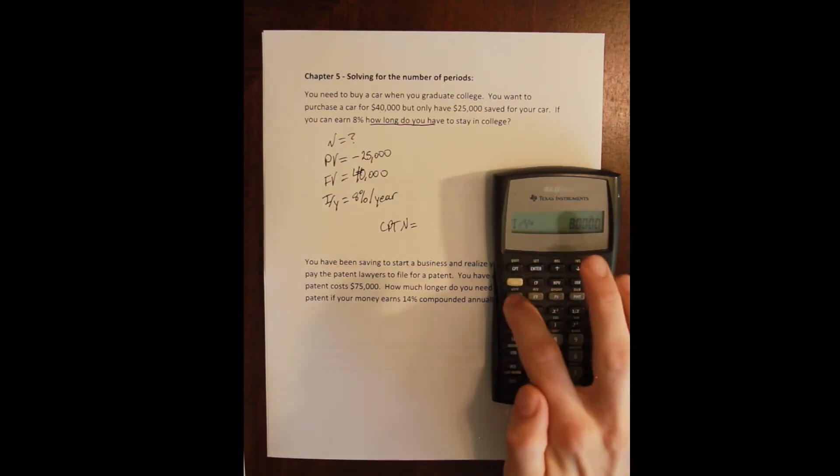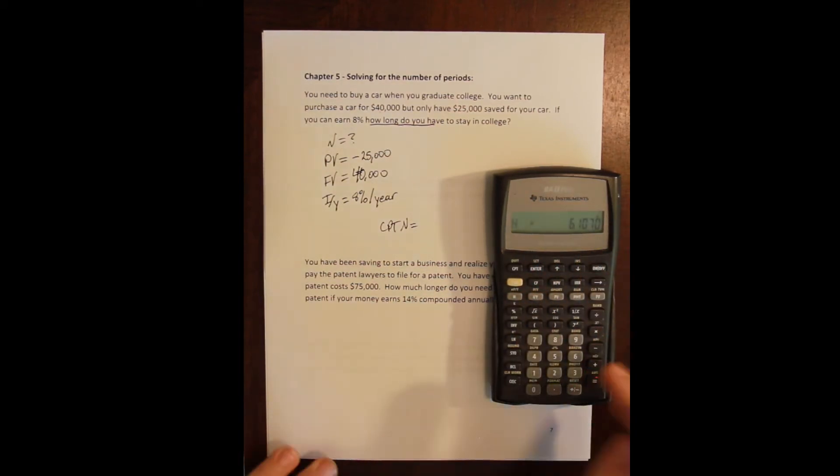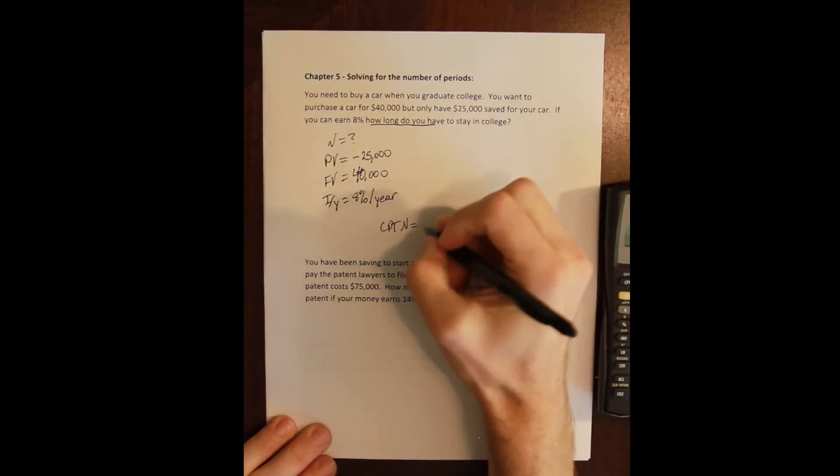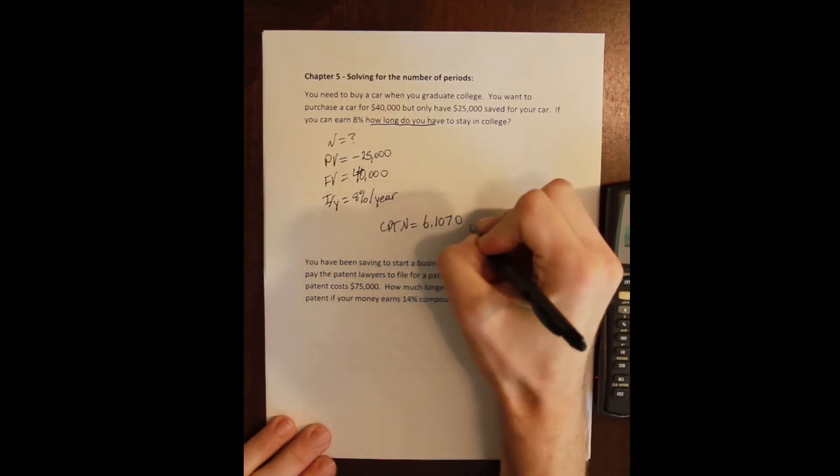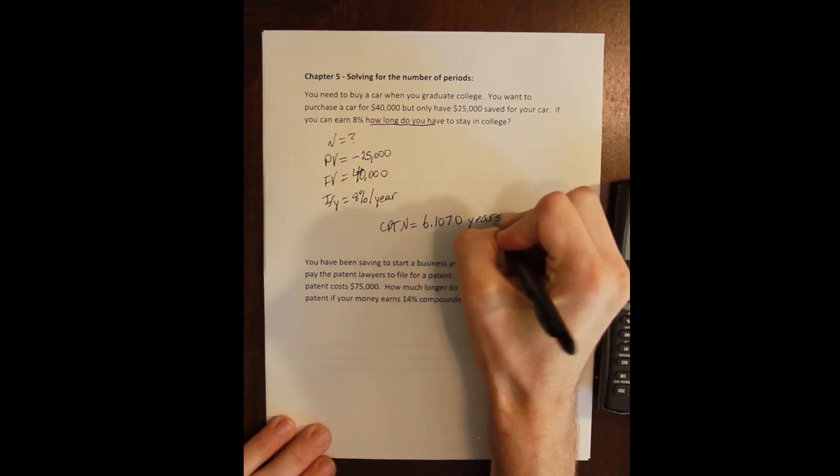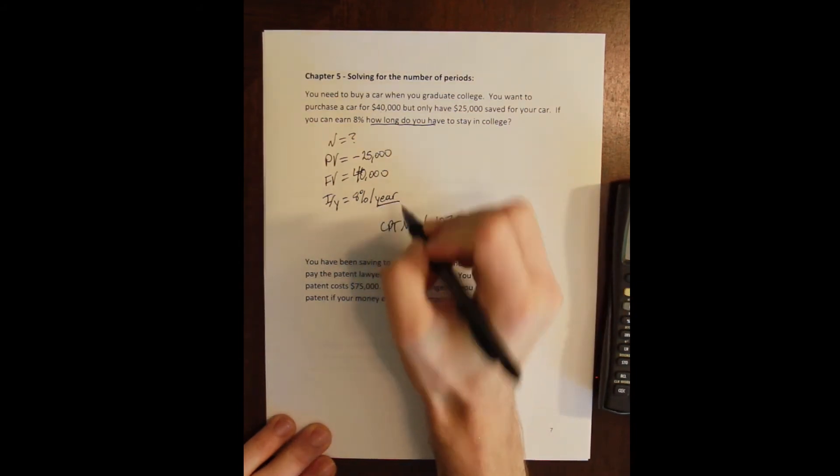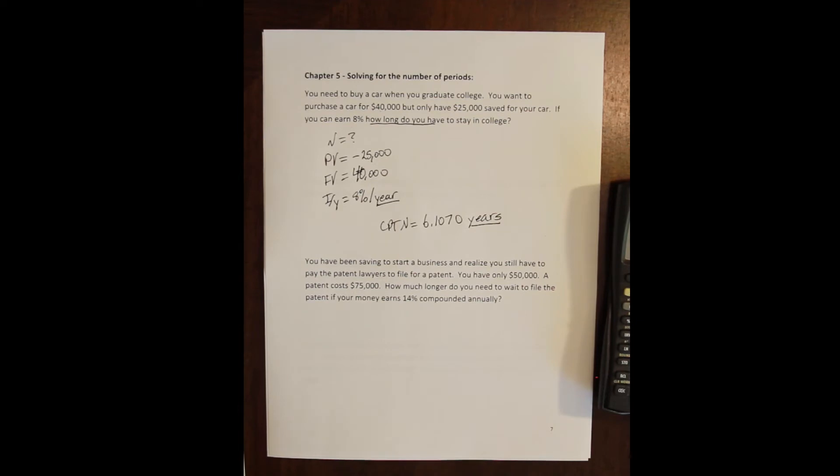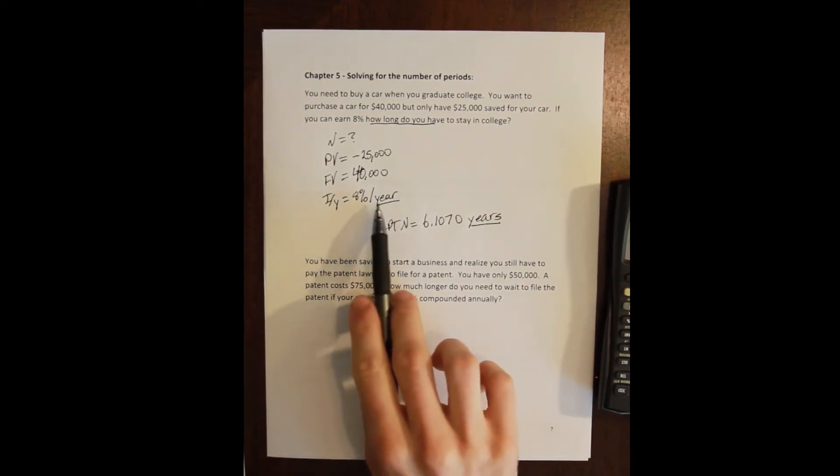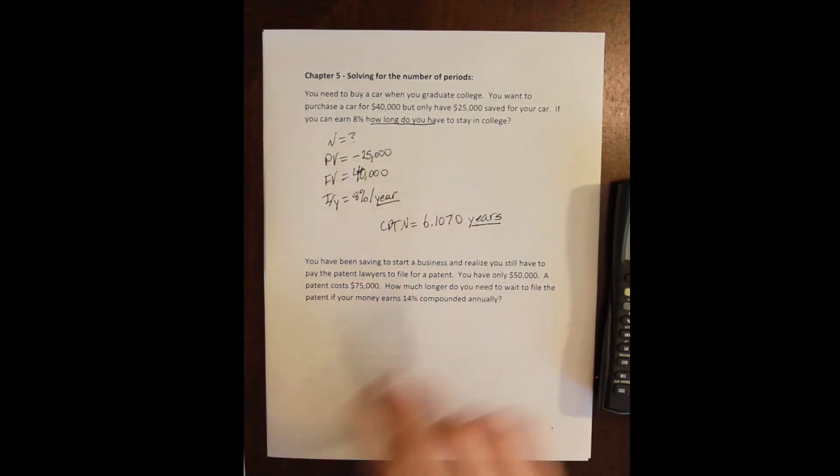And if I compute my n, I find that I need to wait 6.1070 years. Again, remember that the period of my output will agree with the period of my inputs. So in this case, I have an 8% return per year. I need to wait six more years in college before I can get out and buy the car of my dreams, which means most of you guys are juniors or seniors. You've got to probably get a master's, maybe part of a PhD before you can graduate and buy your car.